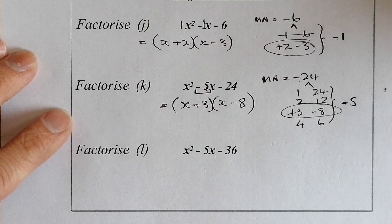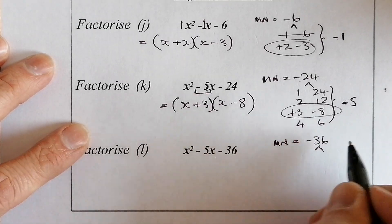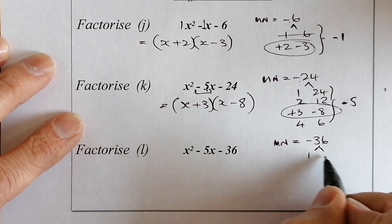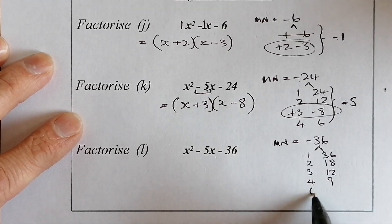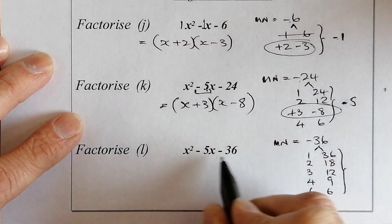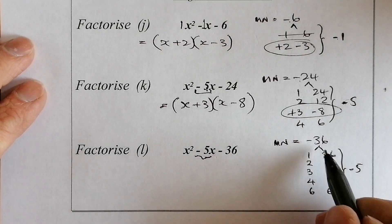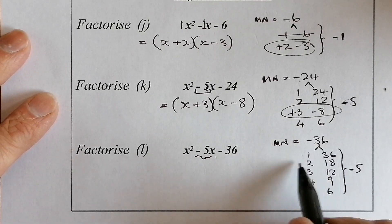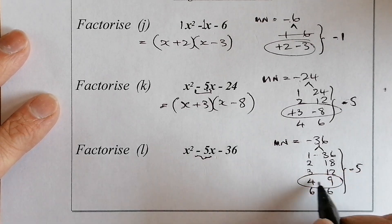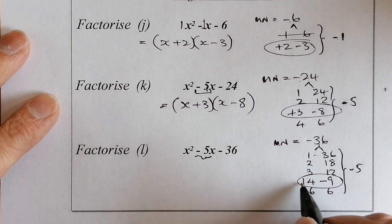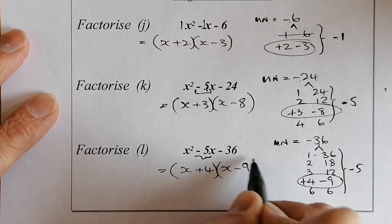Last question before the challenge: magic number is minus 36. Factors of 36: 1 and 36, 2 and 18, 3 and 12, 4 and 9, 6 and 6. I need to make minus 5 — one minus, one plus. The biggest number is the minus, so 4 and −9. That gives (x + 4)(x − 9).